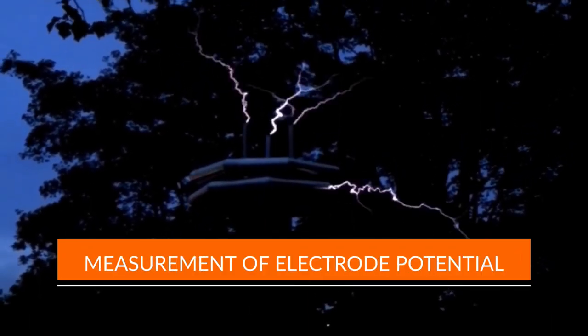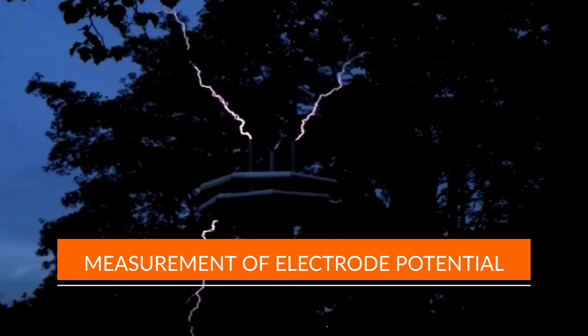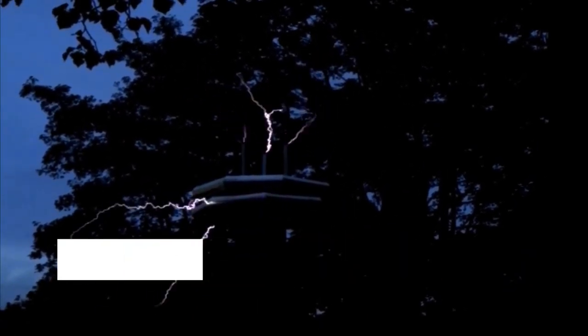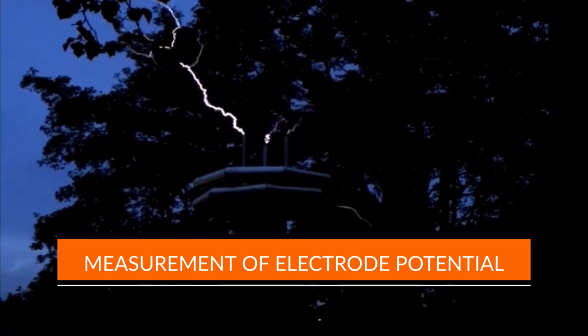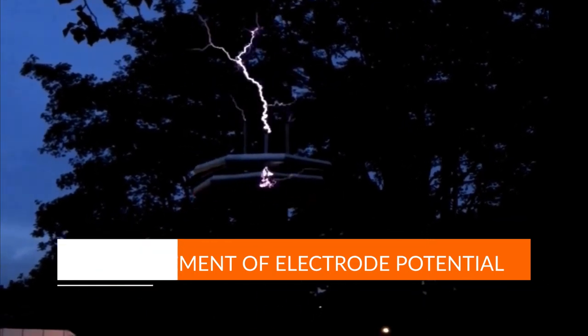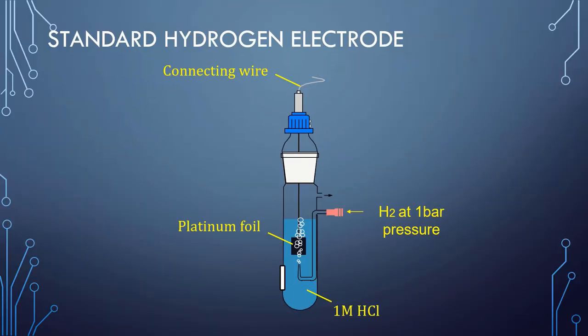The absolute value of the electrode potential of a single electrode cannot be determined, because the oxidation half reaction or reduction half reaction cannot take place alone. It can be measured only by using some electrode as a reference electrode. The reference electrode used is the Standard Hydrogen Electrode (SHE). In the SHE, hydrogen gas at one bar pressure is passed into a one molar HCl solution at 298 K, in which a foil of platinum coated with platinum black remains immersed.